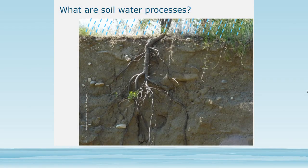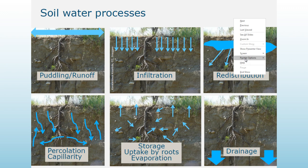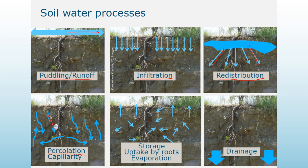Then we have soil water processes. First we have puddling or runoff. Runoff is the lateral movement of water when water cannot infiltrate the ground. If it does infiltrate, then it is called infiltration. After infiltration we have redistribution, where water is moving in different directions. Then we have percolation, which is downward movement. And capillarity, which can be upward or sideways.